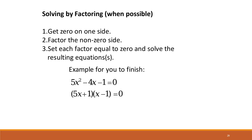Solving by factoring: if you get 0 on one side, factor the non-zero side and set each factor equal to 0, because at least one factor must equal 0 for the product to be 0. Then solve those two equations.